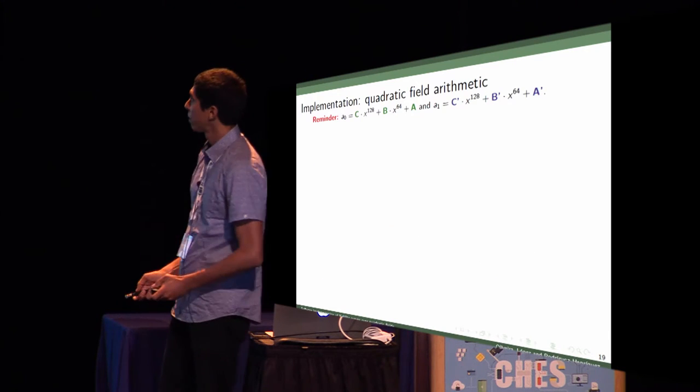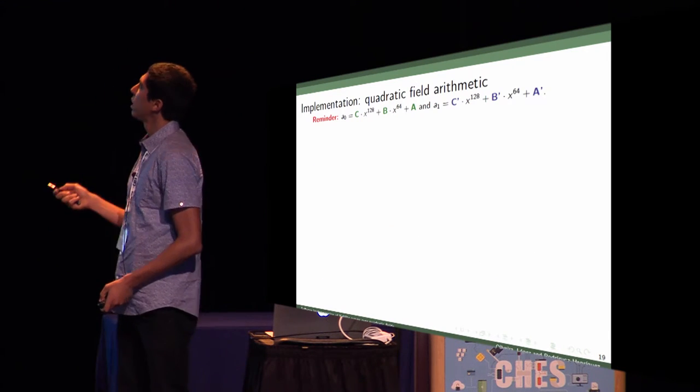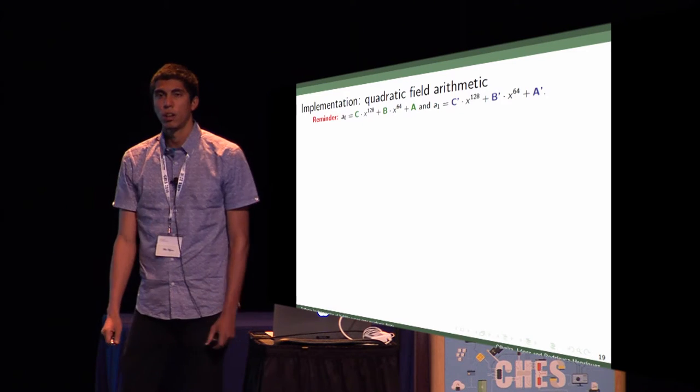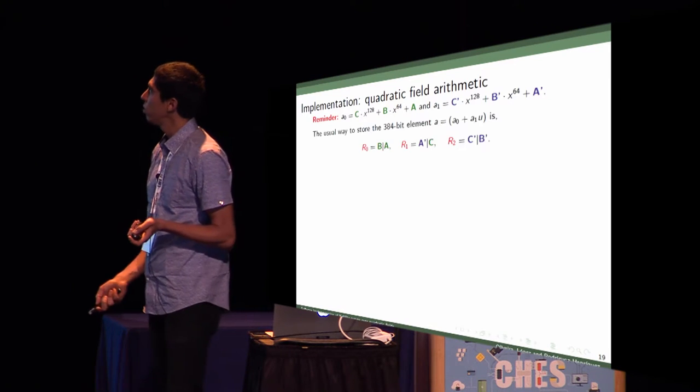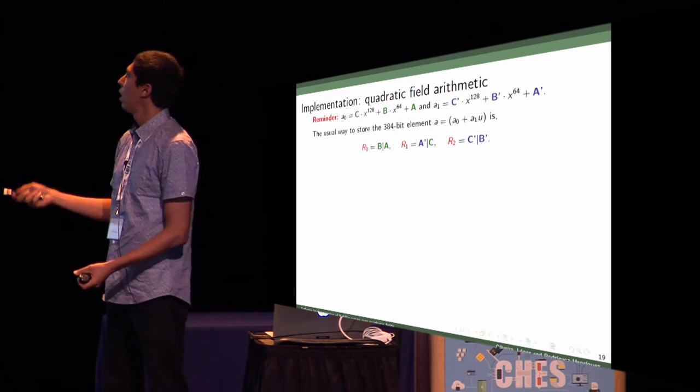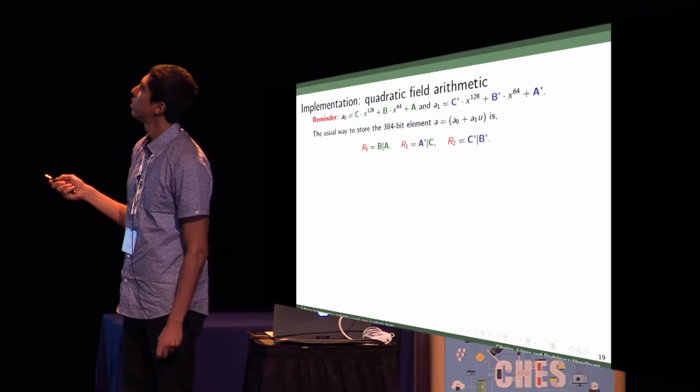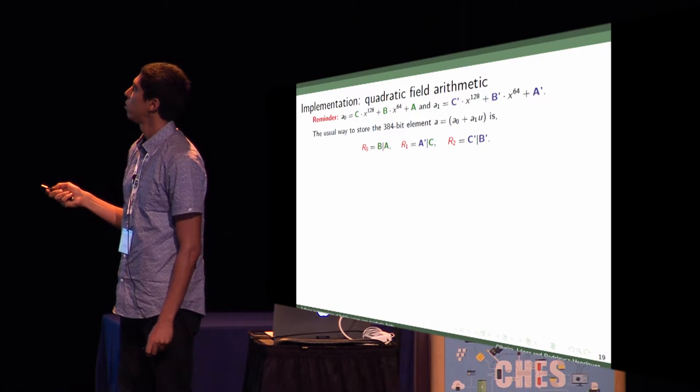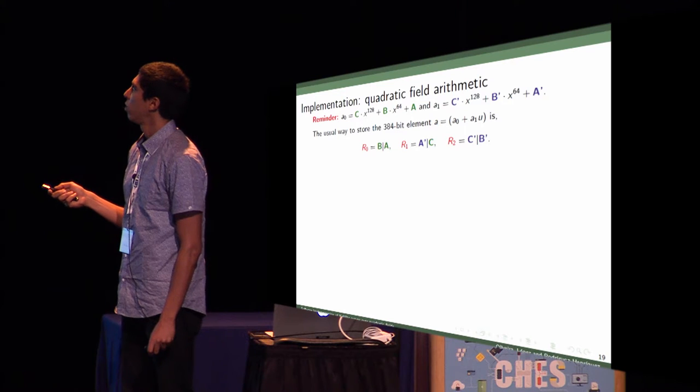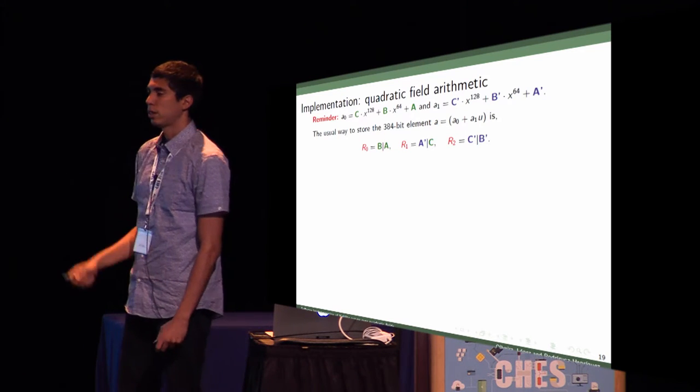How do we store them? Just to remind, these are our terms for the quadratic field element. The usual way is to store in the first register the first two words, then in the second we store the last word of the A0 term, and then we store the rest of the terms.